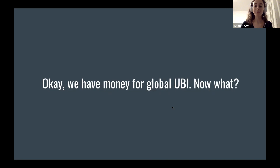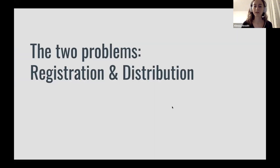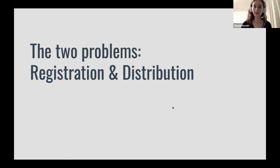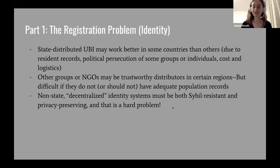That may or may not include governments. There are two major problems when you're trying to think about how you might do this: there's the registration problem and the distribution problem.